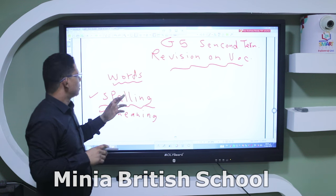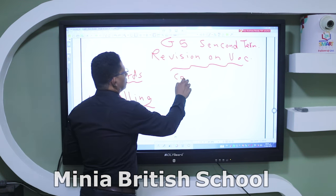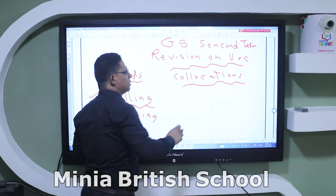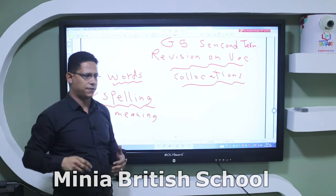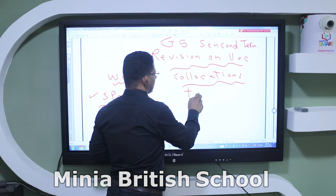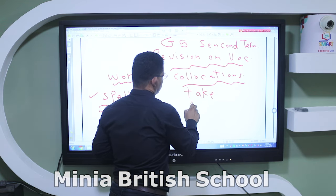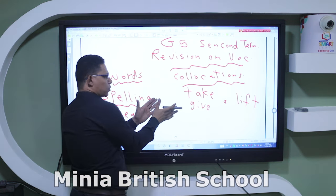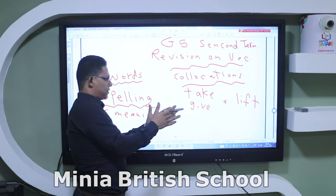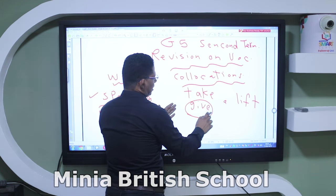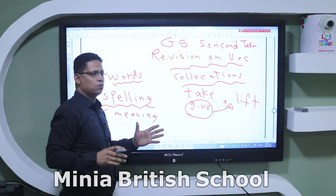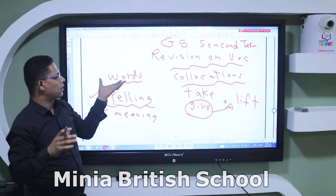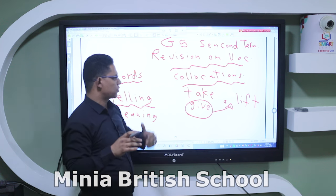Number two, we learned something called collocations. What does it mean? Words that go together. For example, can I say 'take a lift' or 'give a lift'? Collocations means words that usually go together — the answer is 'give a lift.' So when we talk about vocabulary, we don't just talk about words; sometimes we talk about collocations.